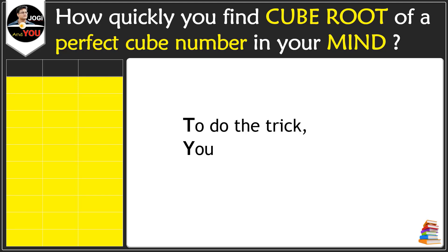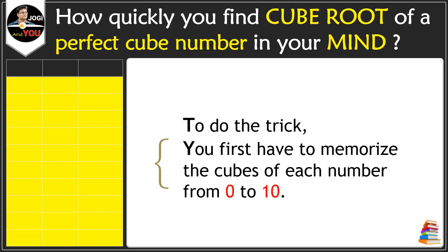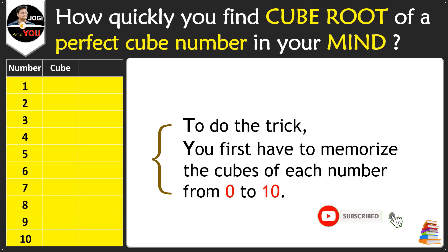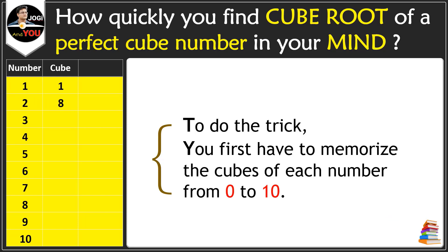To do the trick, you first have to memorize the cube of each number from 0 to 10. The cube of a number is the number multiplied by itself three times. So the cube of 1 is 1, the cube of 2 is 8, and the cube of 3 is 27. I am going to keep writing the cube of each number — you may already know some of these.